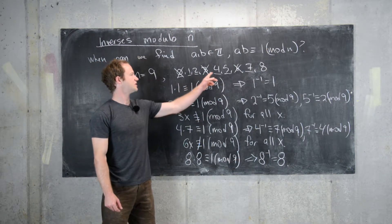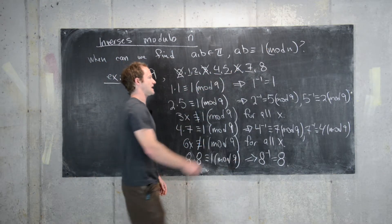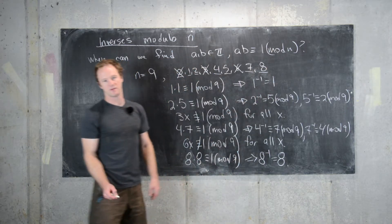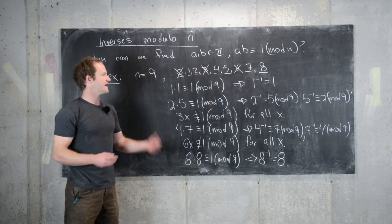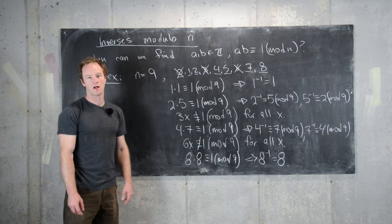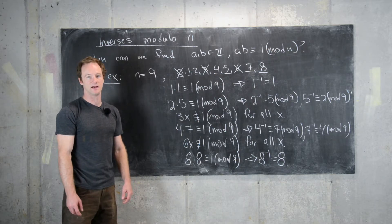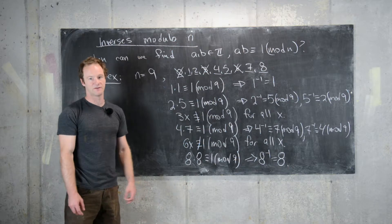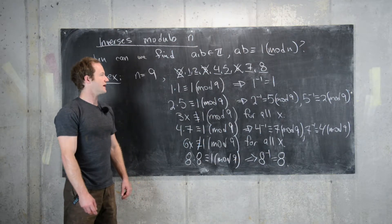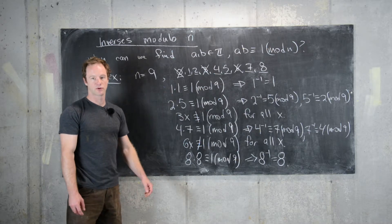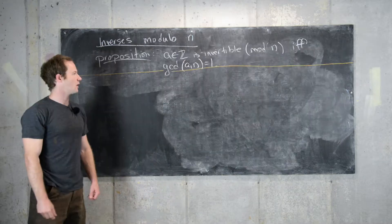So what we've noticed is that 1, 2, 4, 5, 7, and 8 all have inverses modulo 9. And what is similar about them is they all are relatively prime to 9. And that is, in fact, the defining property of elements that are invertible modulo n. So let's clean this up and we'll prove this statement in general.